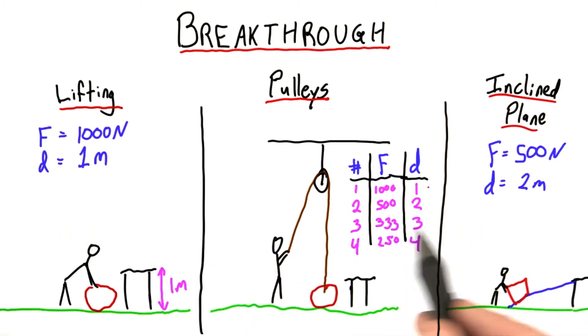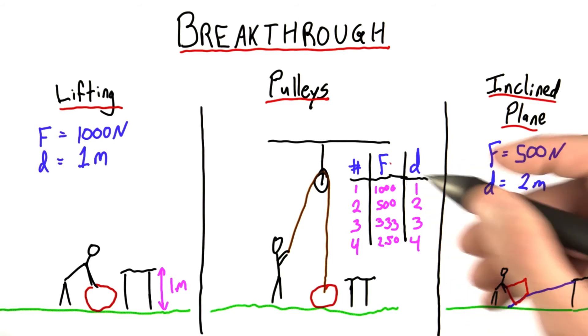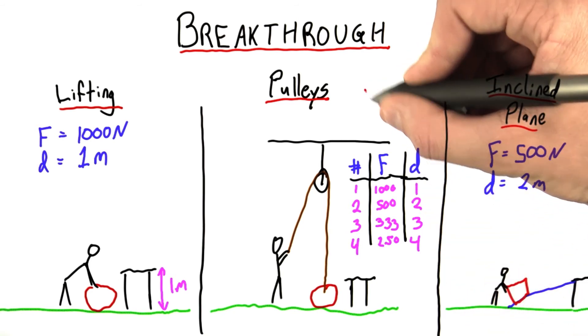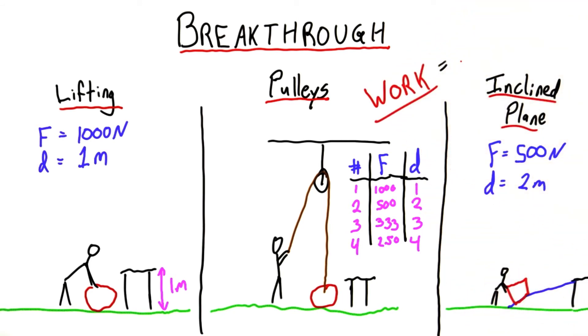1,000 times 1, 333 times 3, 500 times 2, it doesn't matter. These are all giving you a value of 1,000. This quantity, force times distance, is so important that we're going to give it its own name. We're going to call it work.